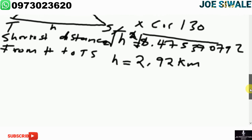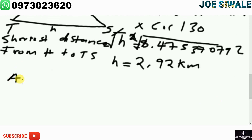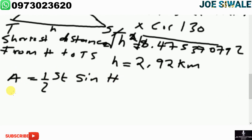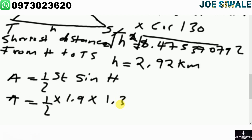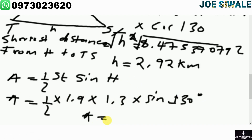For the area of a non-right angled triangle, we say: Area = ½ × s × t × sin(H). So Area = ½ × 1.9 × 1.3 × sin(130°). Punching that into the calculator gives 0.95 square kilometers. So the area is 0.95 km². Since I have the length and the area, I can now calculate the shortest distance.